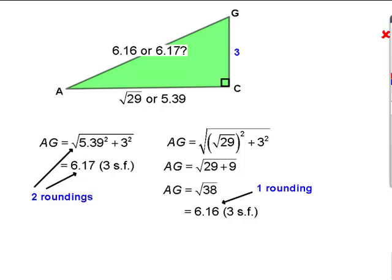But on the right, we've only rounded once, giving 6.16. Now, only one rounding is better. And so I'm going to mark that one as correct and that one as incorrect.